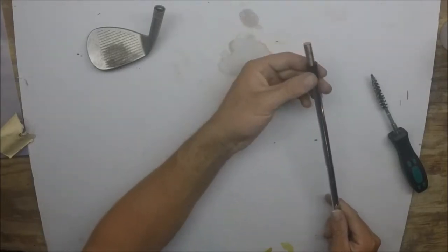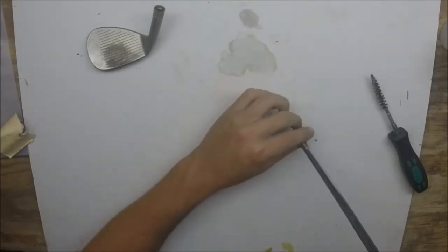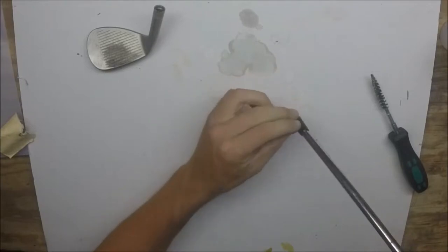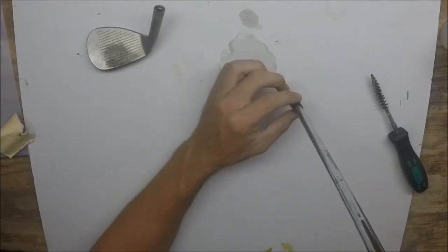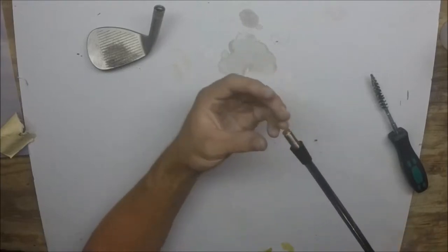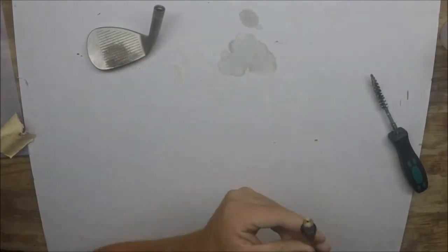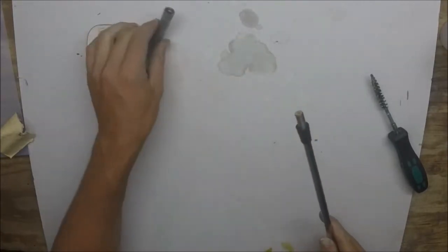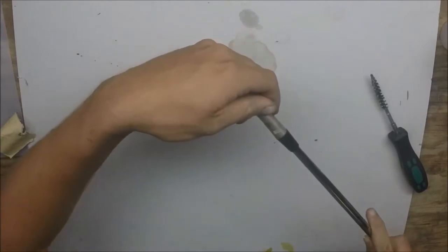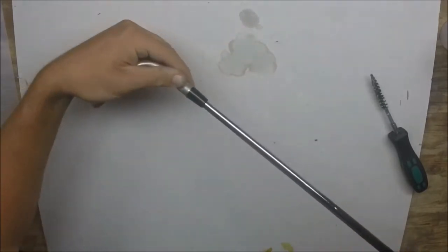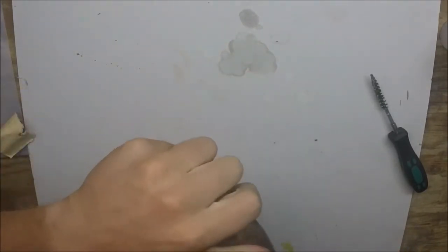Some ferrules won't slide on quite as well as this one did. But if that happens, you'll just want to kind of hit it on the ground like that, or you can use a heat gun to get it down better. So now I'll put it like that, and you'll want to hit it on the ground.